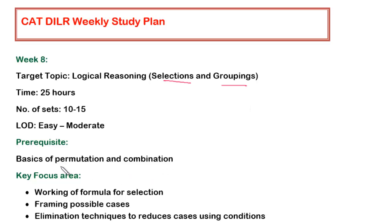The prerequisite is that you should have basic knowledge about permutation combination. I'm not saying if you don't know permutation combination you won't be able to attempt this set. But if you have basic knowledge of permutation combination, how to use NCR and NPR and what are their actual meanings, it will be quite handy.